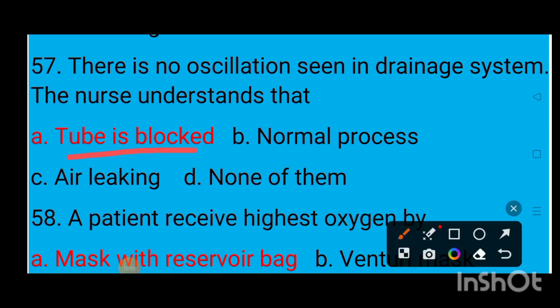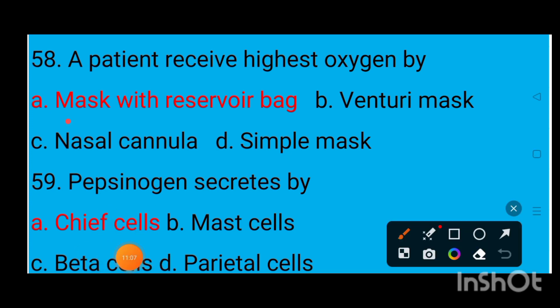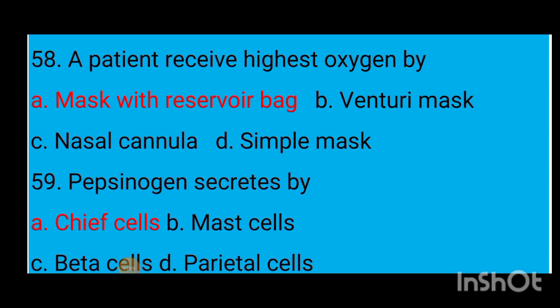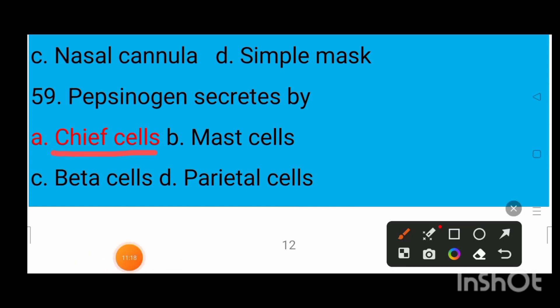The oxygen delivery device with a reservoir bag — option B Venturi mask, option C nasal cannula, option D simple mask — the correct answer is mask with reservoir bag. Question on pepsinogen: pepsinogen is secreted by option A chief cells, option B mast cells, option C beta cells — the correct answer is option A, chief cells.